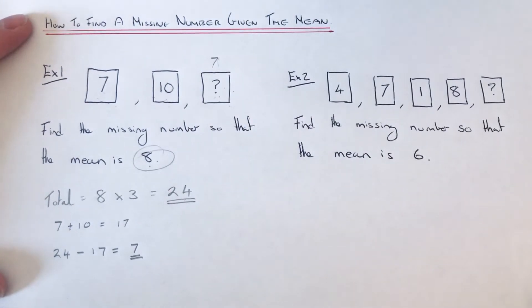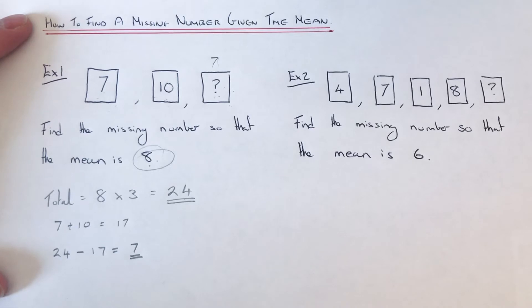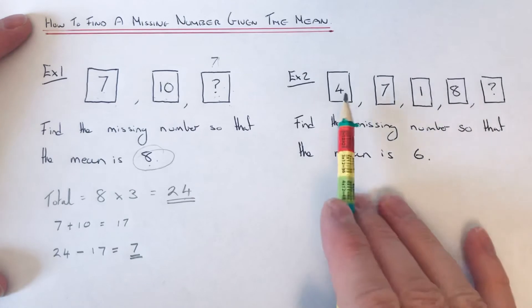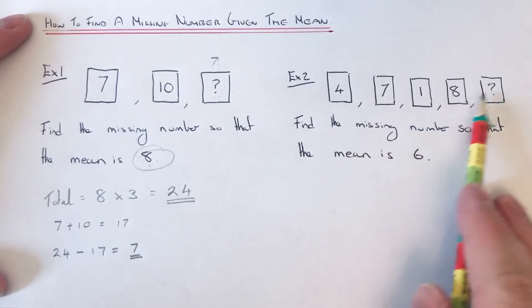Let's have a look at the second example. We've got to find the missing number so that the mean is 6. This time our numbers are 4, 7, 1, 8, and again we're missing the number at the end.